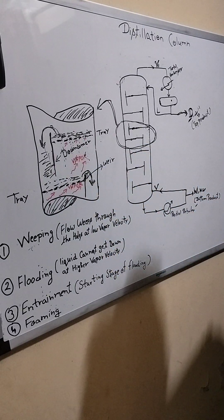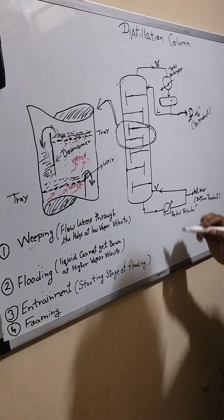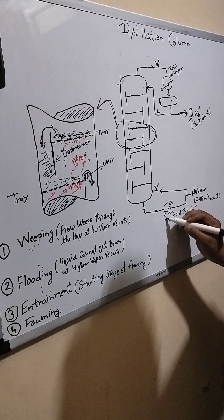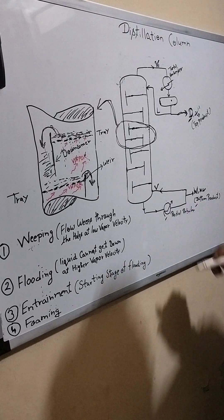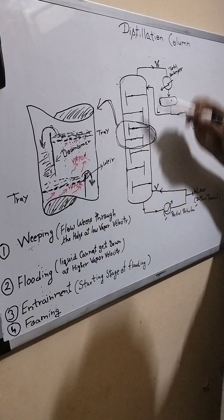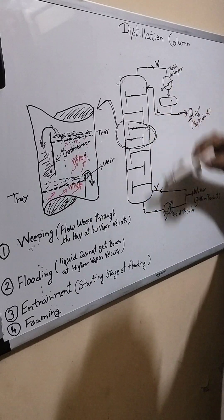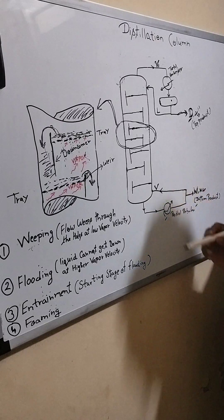So when weeping occurs, you have to see if your steam is sufficient or not. Your pressure across the column is very low, you have to see it.